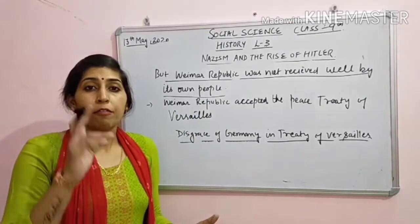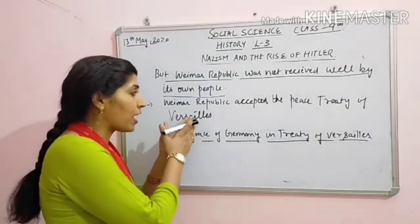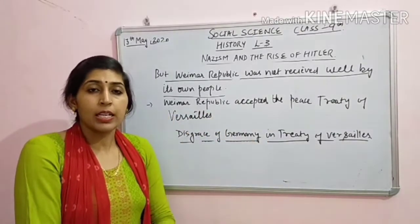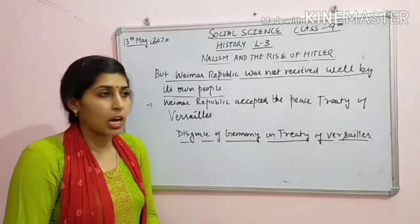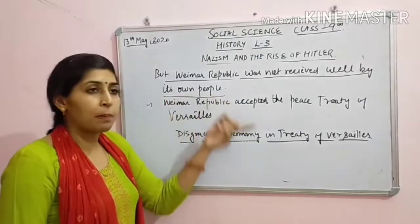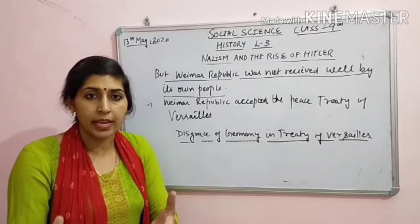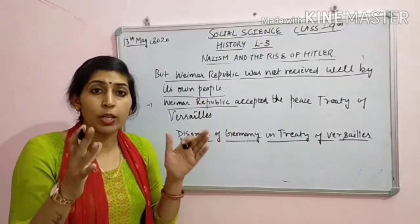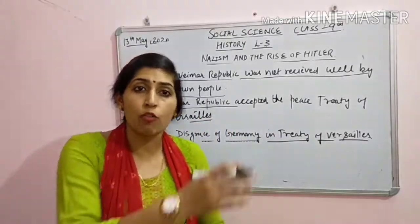Versailles - aap yaad kariye humne French Revolution mein Versailles palace tha France mein. Toh Versailles France mein, ek peace treaty hui. France kis ki taraf tha? Allied part ki taraf. Aur allied part ne Germany ko bola ki aapne jo galti ki hai, uske liye hume ek treaty kar rahe hain, ek samjhauta kar rahe hain, aur uske liye aapko aana padega Versailles ki, ki treaty yahaan par sign hogi. Wimmer Republic ke jo deputies gahe the treaty ko sign karne ke liye, woh waaqai mein sign karke aa gaye.